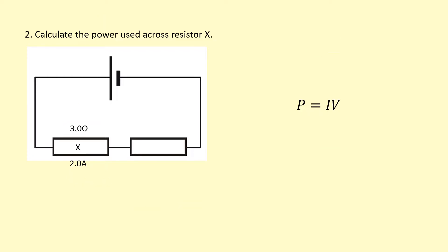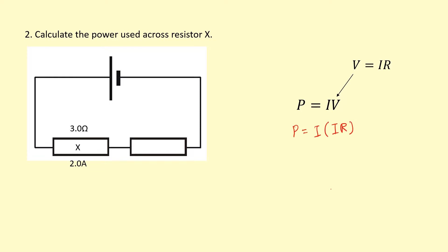Same question, except instead of potential difference, I've got the current. But that's okay — I can figure out the potential difference by using Ohm's law. I'm going to replace V with IR, so P equals current times IR. Expanding that, the I's multiply together to give P equals I squared R. Doing this calculation still gives me 12 watts.